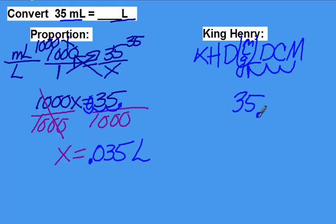Thirty-five. Here is your decimal. Move it three to the left. Fill in your decimal. And you have 0.035 liters.